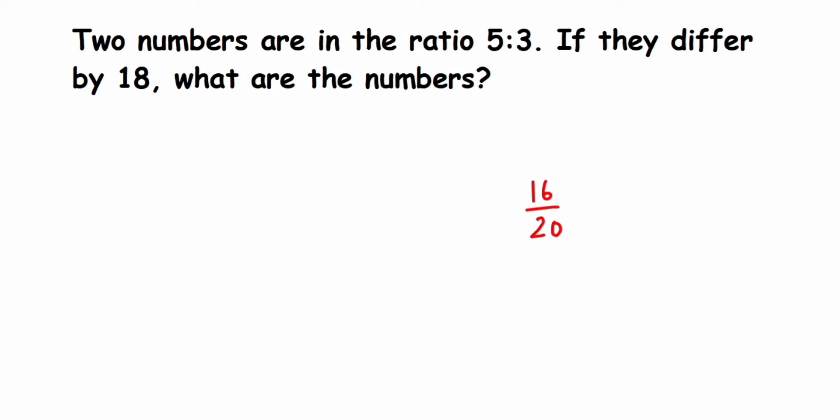Suppose I have a number 16/20. I can reduce this by cancelling with four. I can cancel in the four table - I'll get 4:5. Four fours are 16 and four fives are 20, so four is common here.